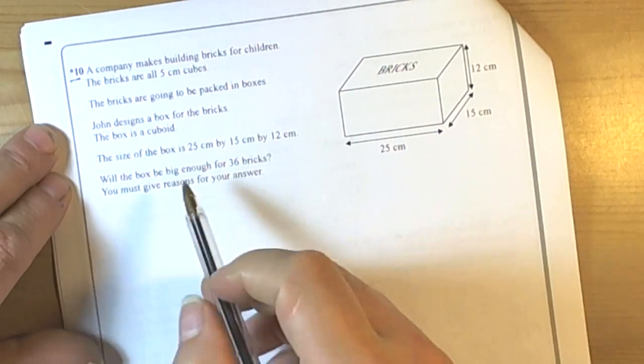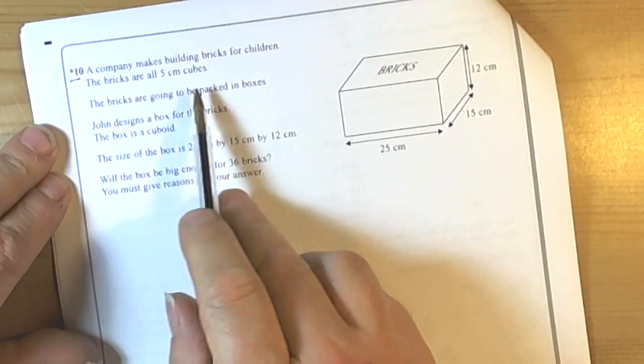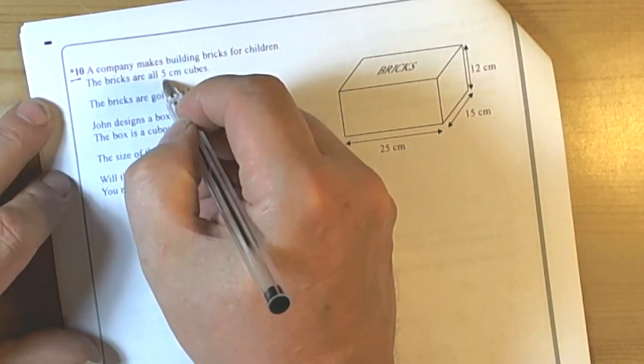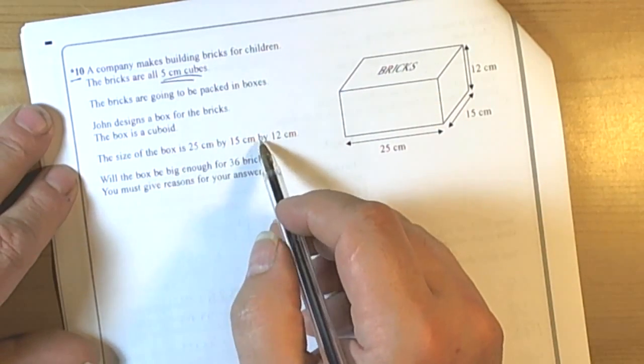So, let's start this question. Lots of workings out, lots of marks. Let's look at what the information is. The company makes bricks that are 5cm cubes - that's important information.